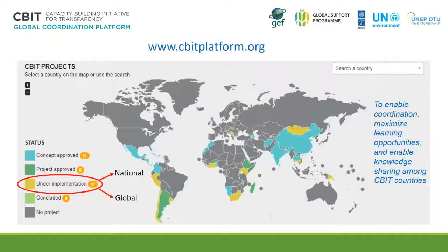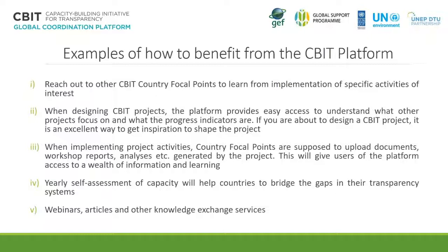You can reach the CBIT global coordination platform at www.cbitplatform.org. On the front page you'll see a global map with an overview of CBIT project statuses worldwide. More than 30 projects in Latin America, Africa, Asia and Europe have their concepts approved. Eight projects, mostly in Latin America and Africa, have been approved, and a further 17 projects are under implementation. The overall aim of the platform is to enable coordination, maximize learning opportunities, and enable knowledge sharing among CBIT countries.